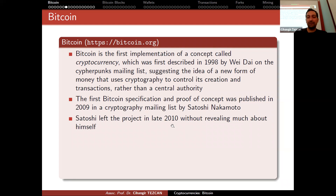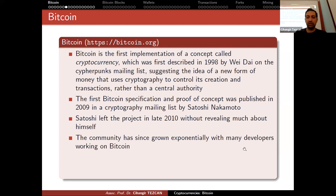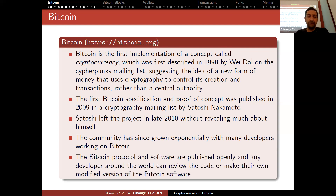Satoshi left the project in late 2010 without revealing much about himself. He said he was going to focus on other projects, disappeared, and left the code to other developers who keep maintaining it. The Bitcoin protocol and software are published openly, and any developer around the world can review the code or make their own modified version. If you want to create a new cryptocurrency, you can just take the Bitcoin software, make necessary changes, and create your new cryptocurrency.